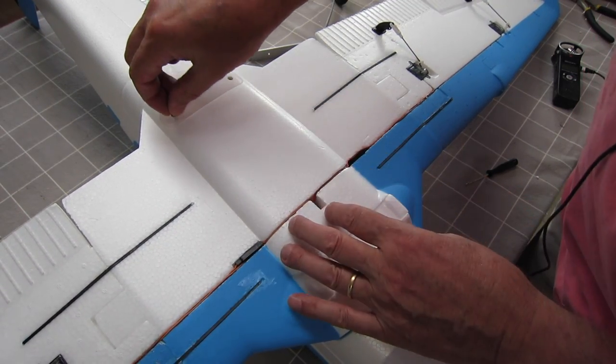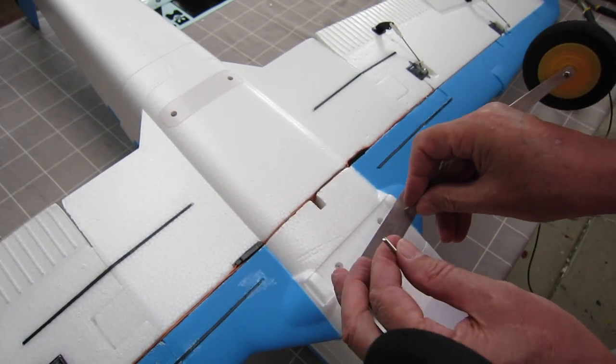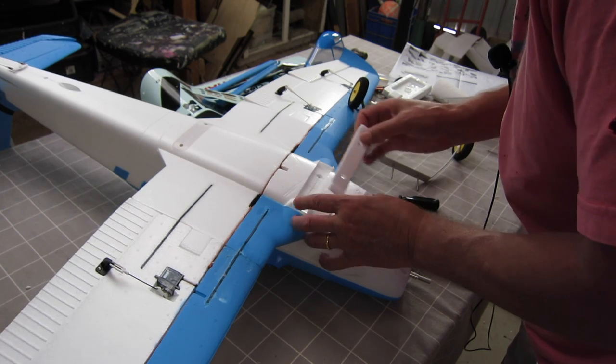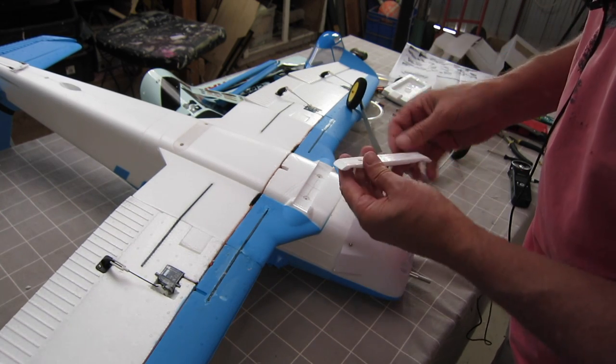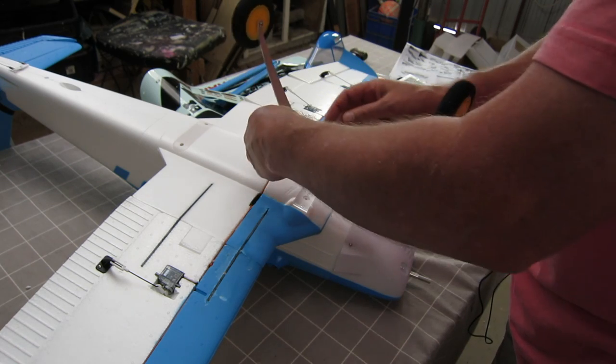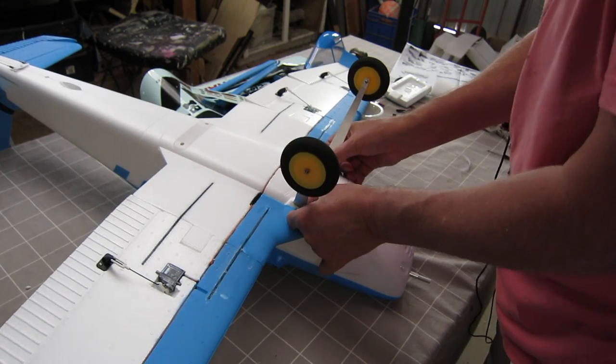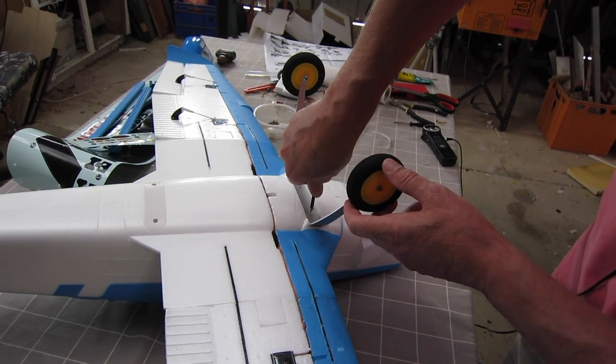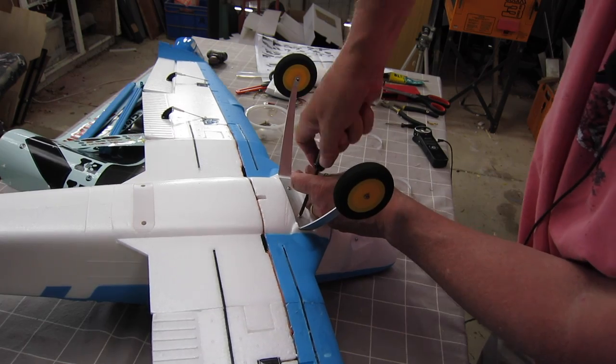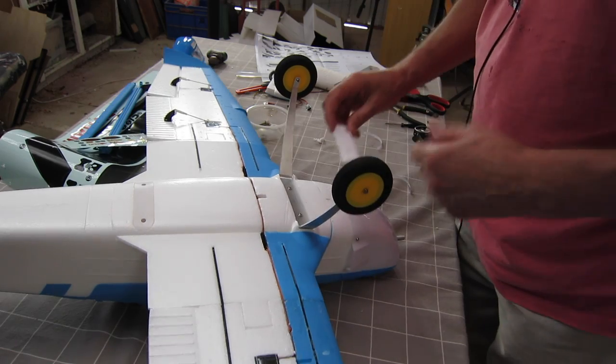Oh there we go, there's a little cover. Oh we've got some double-sided tape on there too. Put the landing gear in and now we put the little cover on. There we go, that's looking better.